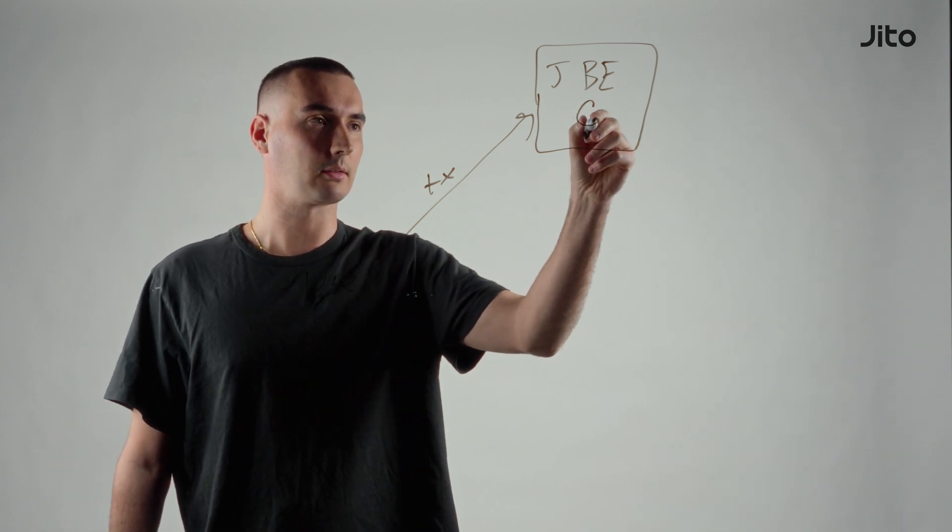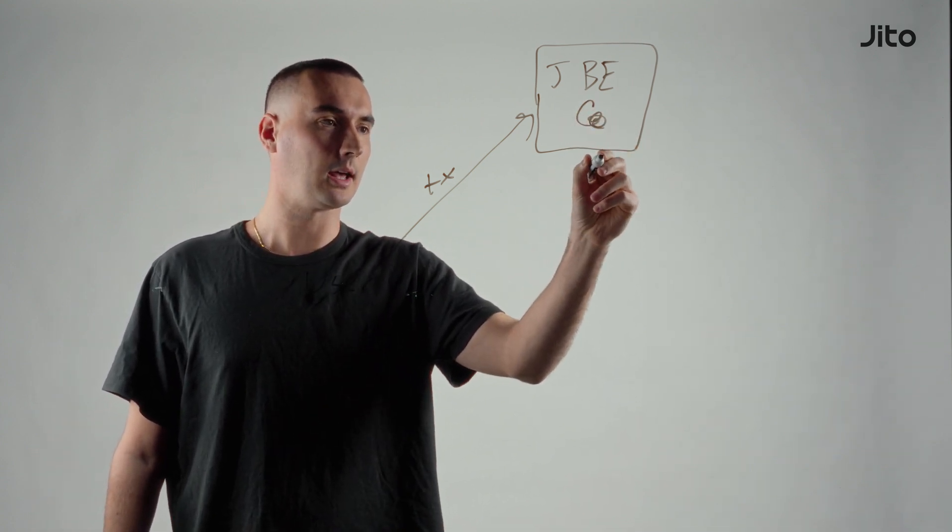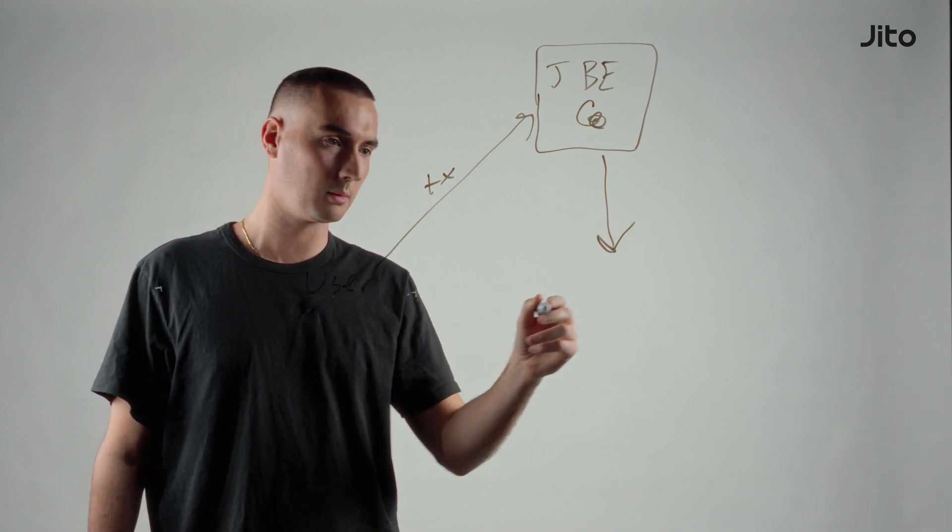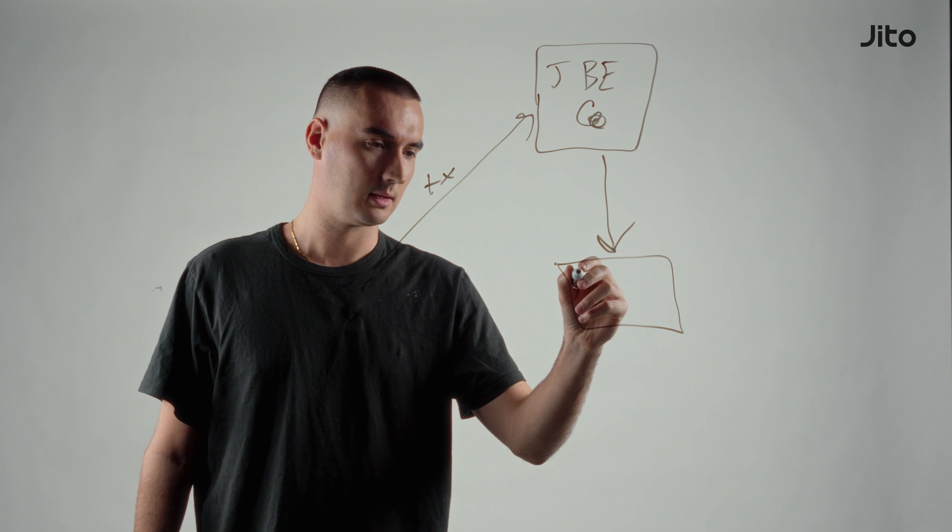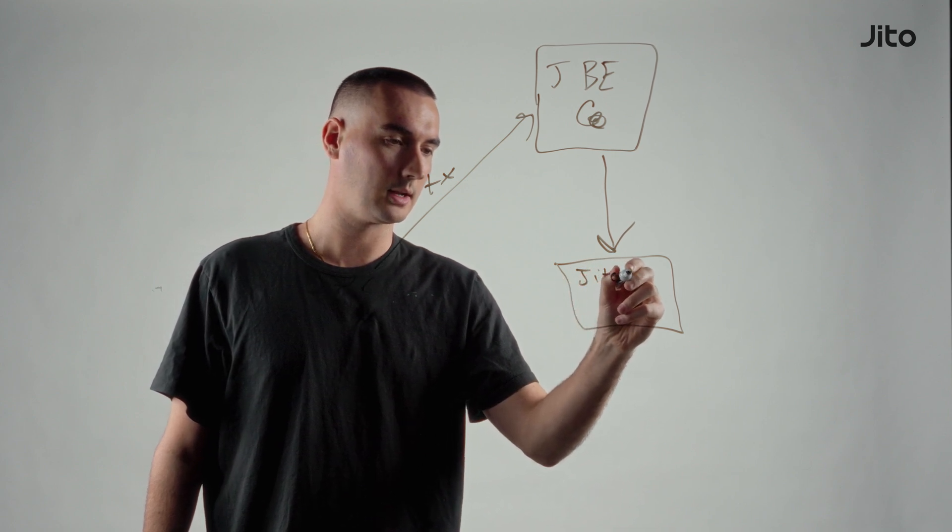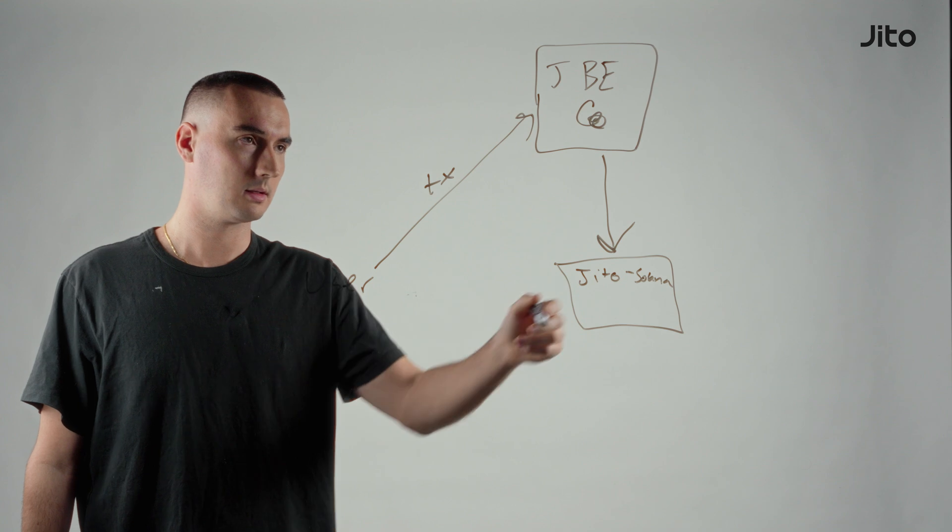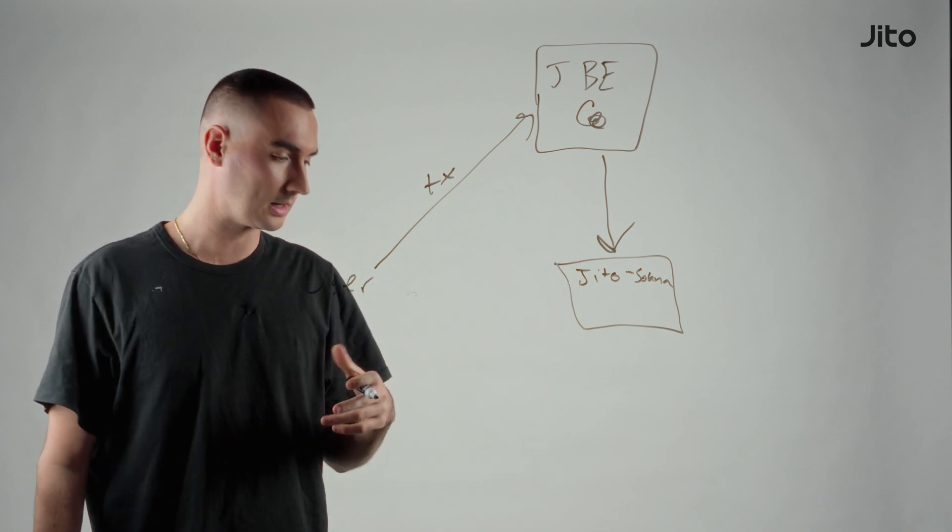It's running some stuff in here and then the best transactions, the ones that pay the most, get forwarded to the validator. So this is a Jito Solana validator and that validator will process those transactions very fast.